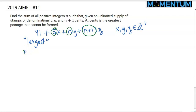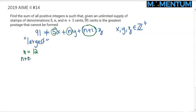Let's think about it. If n equals 12, for instance — is it possible to hit 91? So if n equals 12, then n+1 equals 13. What numbers can be hit using these two numbers as well as fives? We have an unlimited supply of 12s, 13s, and 5s.